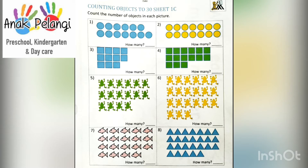Count together with me. 1, 2, 3, 4, 5, 6, 7, 8, 9, 10, 11, 12, 13. There are 13. Write 13 here.